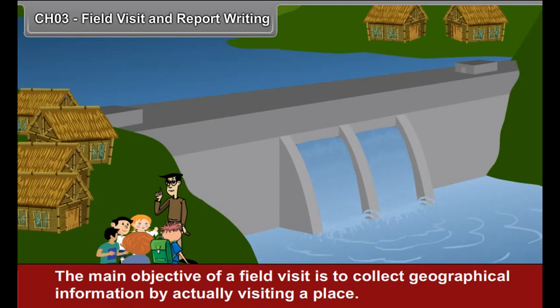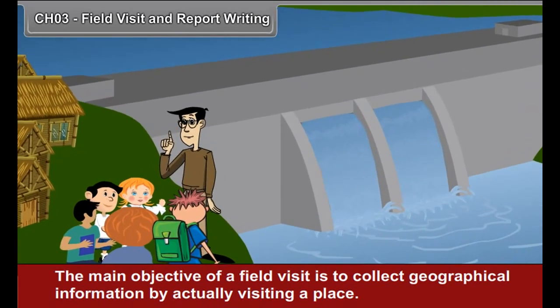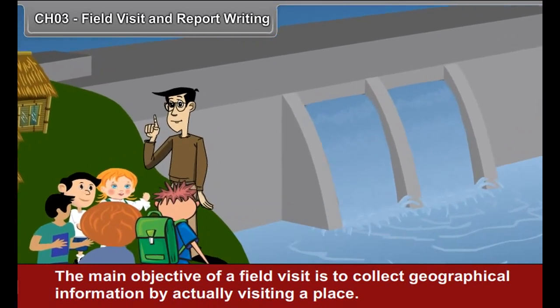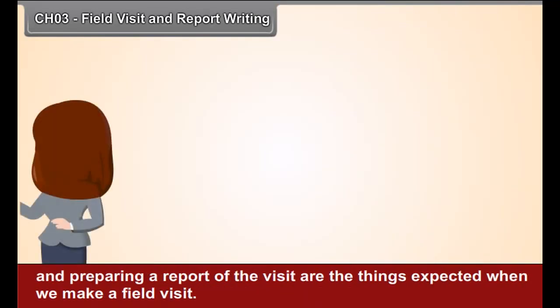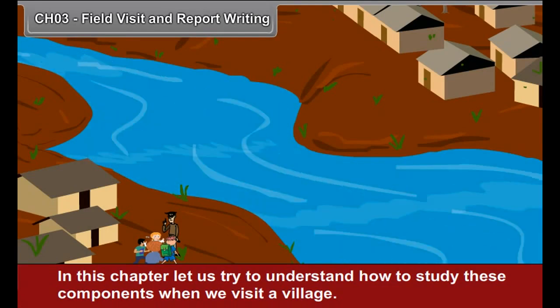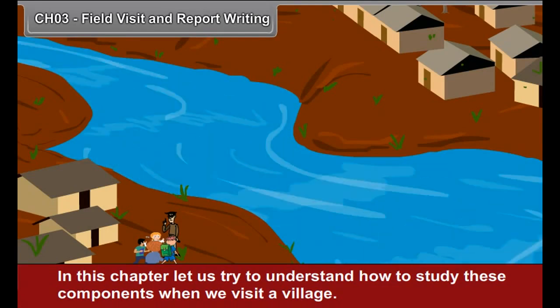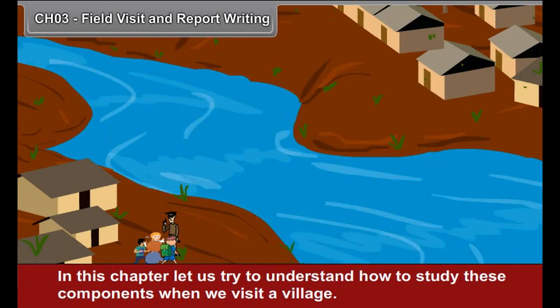Chapter 3: Field Visit and Report Writing. The main objective of a field visit is to collect geographical information by actually visiting a place, observing various components of the physical and cultural environment, collecting information through surveys, and preparing a report of this visit. In this chapter, let us try to understand how to study these components when we visit a village.